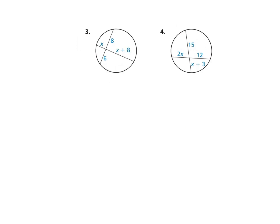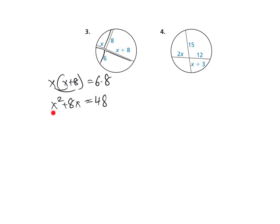Number 3 gets a little more complex. You have X times the group X plus 8 equal to 6 times 8. Distribute: X squared plus 8X equals 48. Any time you see X squared plus another X with an equal sign, we need to move the 48 to the left side. Subtract 48 from both sides.